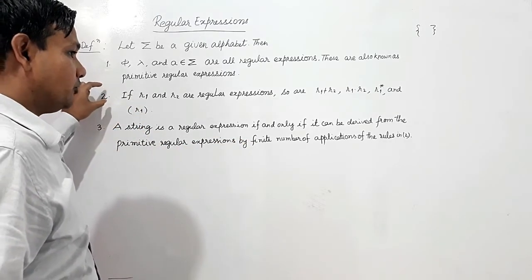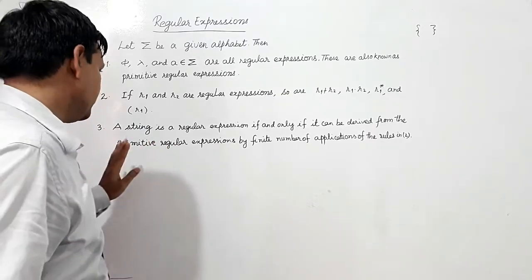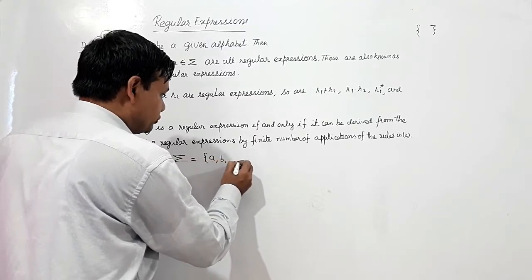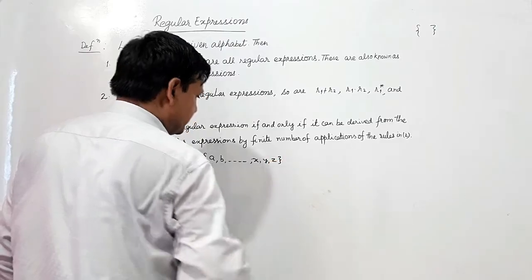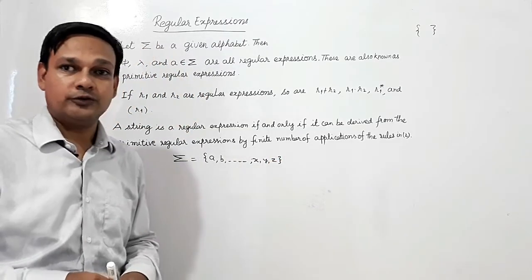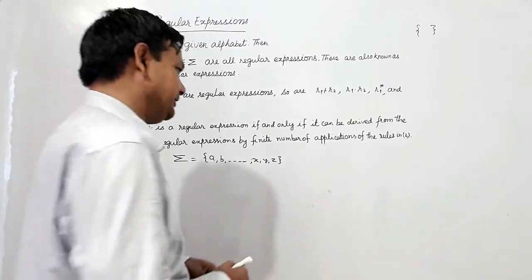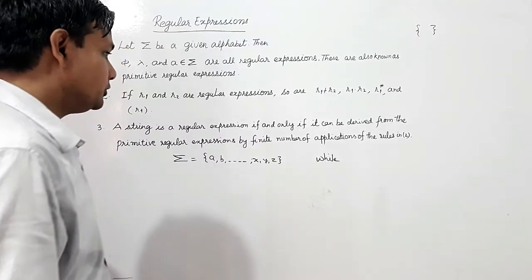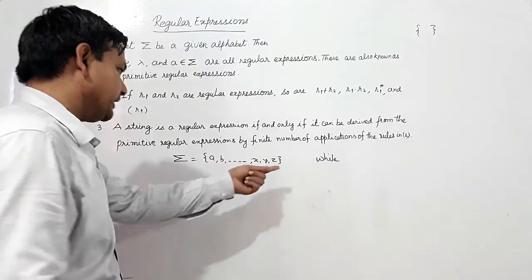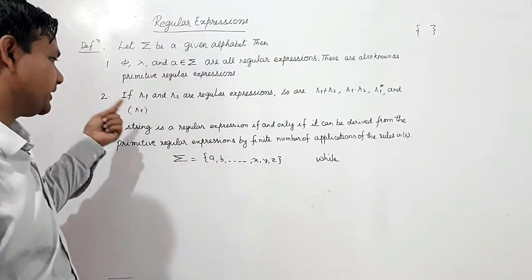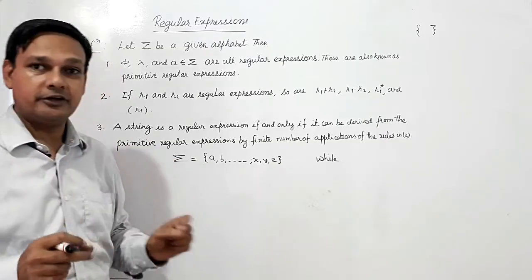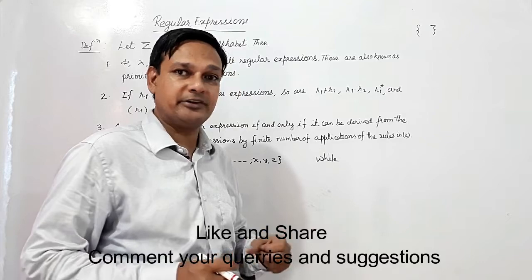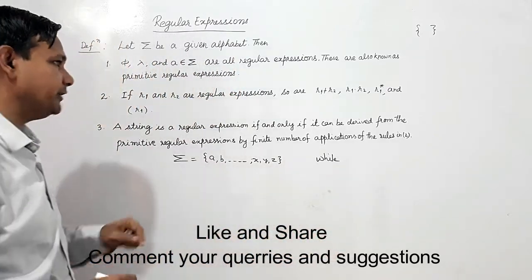For example, if sigma equals {a, b, ..., x, y, z}, and we want to show that 'while' is a regular expression: W is a single symbol, so it is a primitive expression. H is also a primitive expression. I is also a primitive expression. L and E are also primitive expressions.